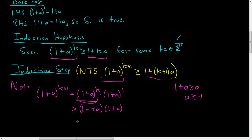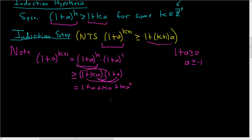At this point, there's not much we can do except distribute everything. So: 1·1 = 1, 1·a = a, the inside terms give ka, and the last terms give ka². This was by the induction hypothesis.